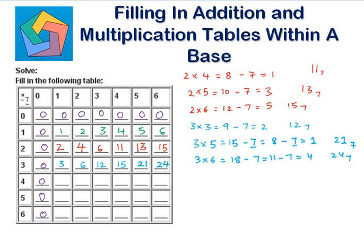Now with 4: 4 times 1 is 4. 4 times 2 is 8, and 8 in base 7 is 11. 4 times 3 is 12, and 12 in base 7 is 15. 4 times 4 is 16. 16 minus 7 is 9, and 9 minus 7 is 2, so this is 22 in base 7.